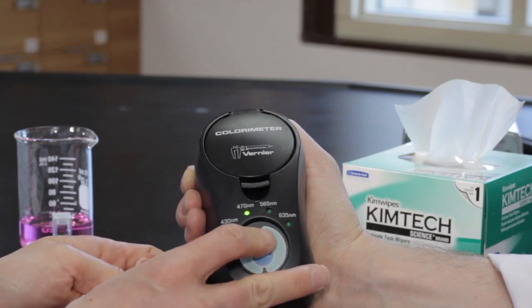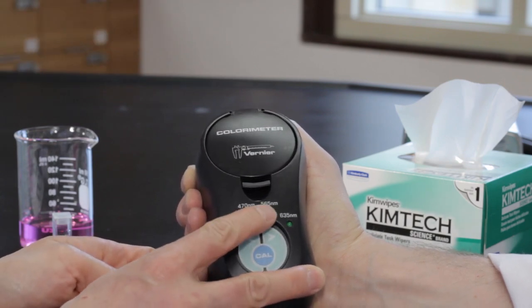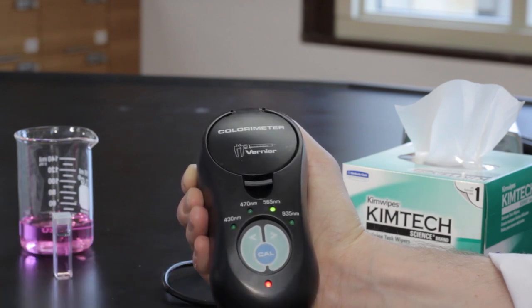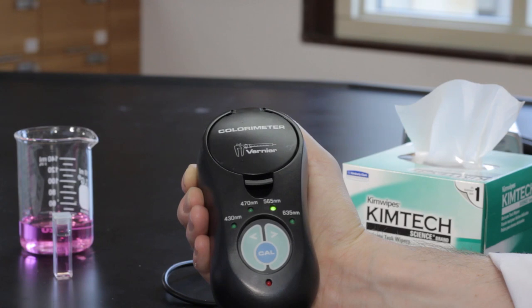On the colorimeter, use the two arrows to set the light wavelength to 565 nanometers. Press the Cal button and a red light will blink 10 times. The colorimeter has now been calibrated.